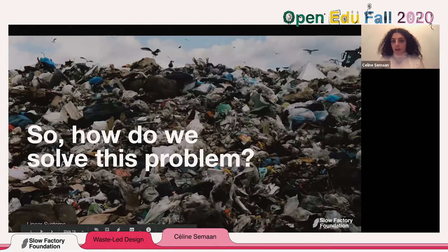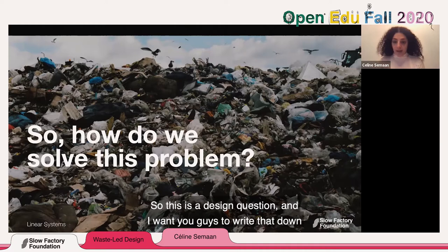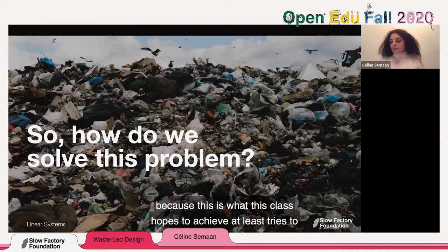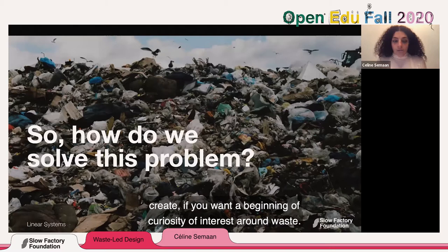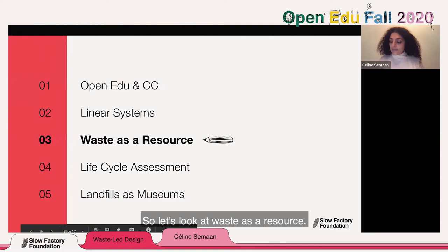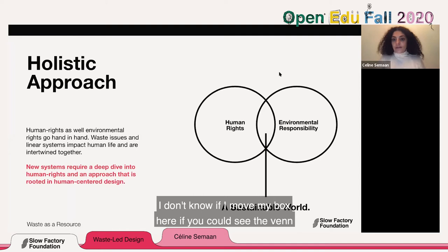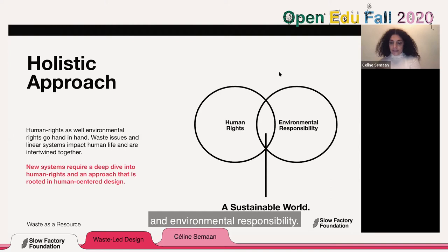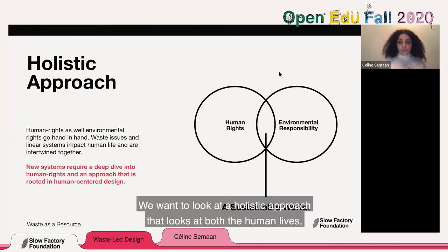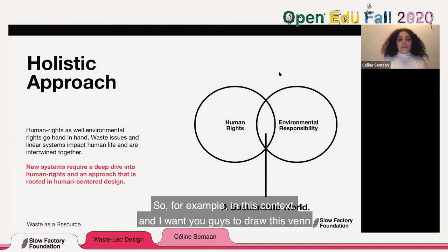So how do we solve this problem? This is a design question. This class hopes to create a beginning of curiosity and interest around waste. At Slow Factory, we always work at the intersection of human rights and environmental responsibility — a holistic approach that looks at both human lives, like the Kayeye, and waste together.